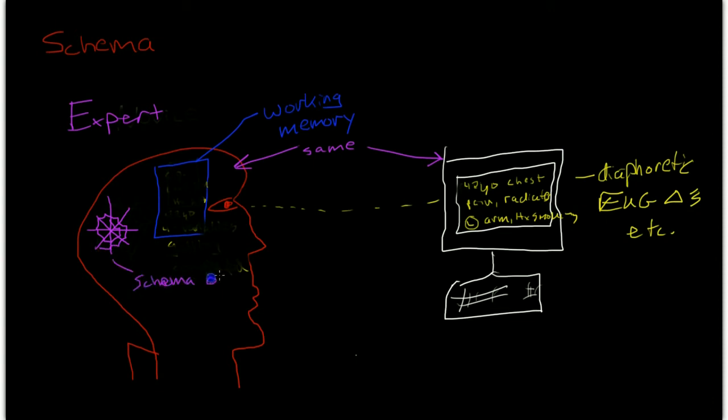what an expert has is previously developed schema containing lots of information about, in this case, acute coronary syndrome. So, the expert actually loads the schema of all the information that they have about a patient presenting with acute coronary syndrome into their working memory and uses that schema as one chunk of data that can